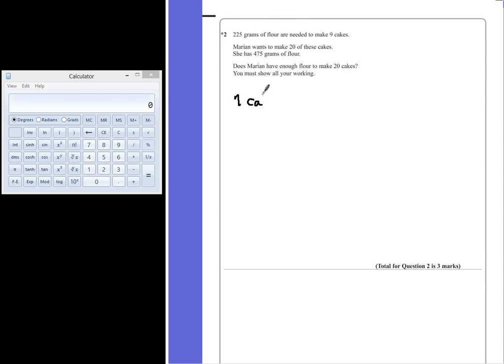So 1 cake can be found by saying we have 225 grams of flour, and we are going to split that between the 9 cakes that it makes. So over to our calculator, 225 divided by 9 equals 25. So every cake that we want to make needs 25 grams of flour.